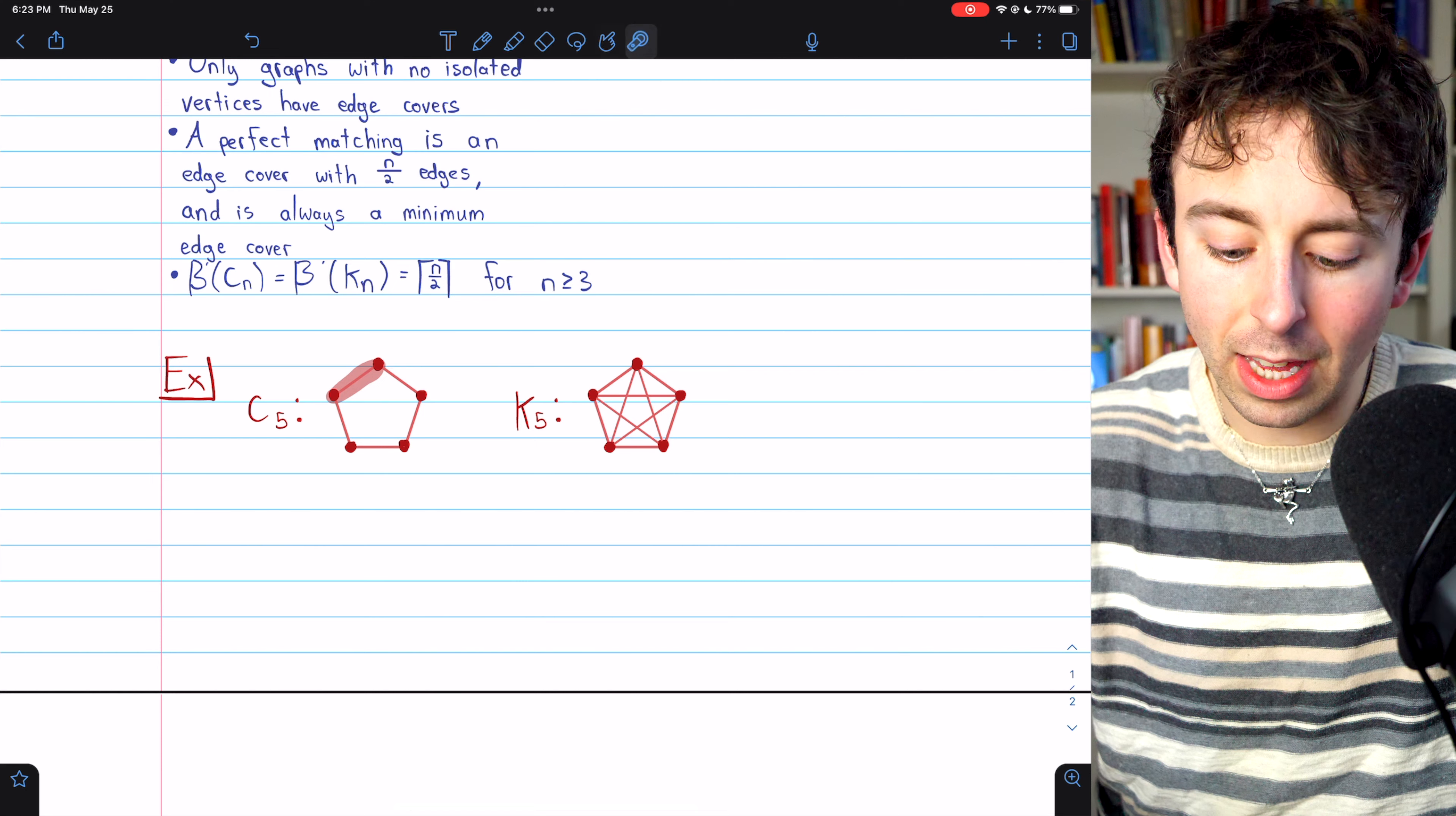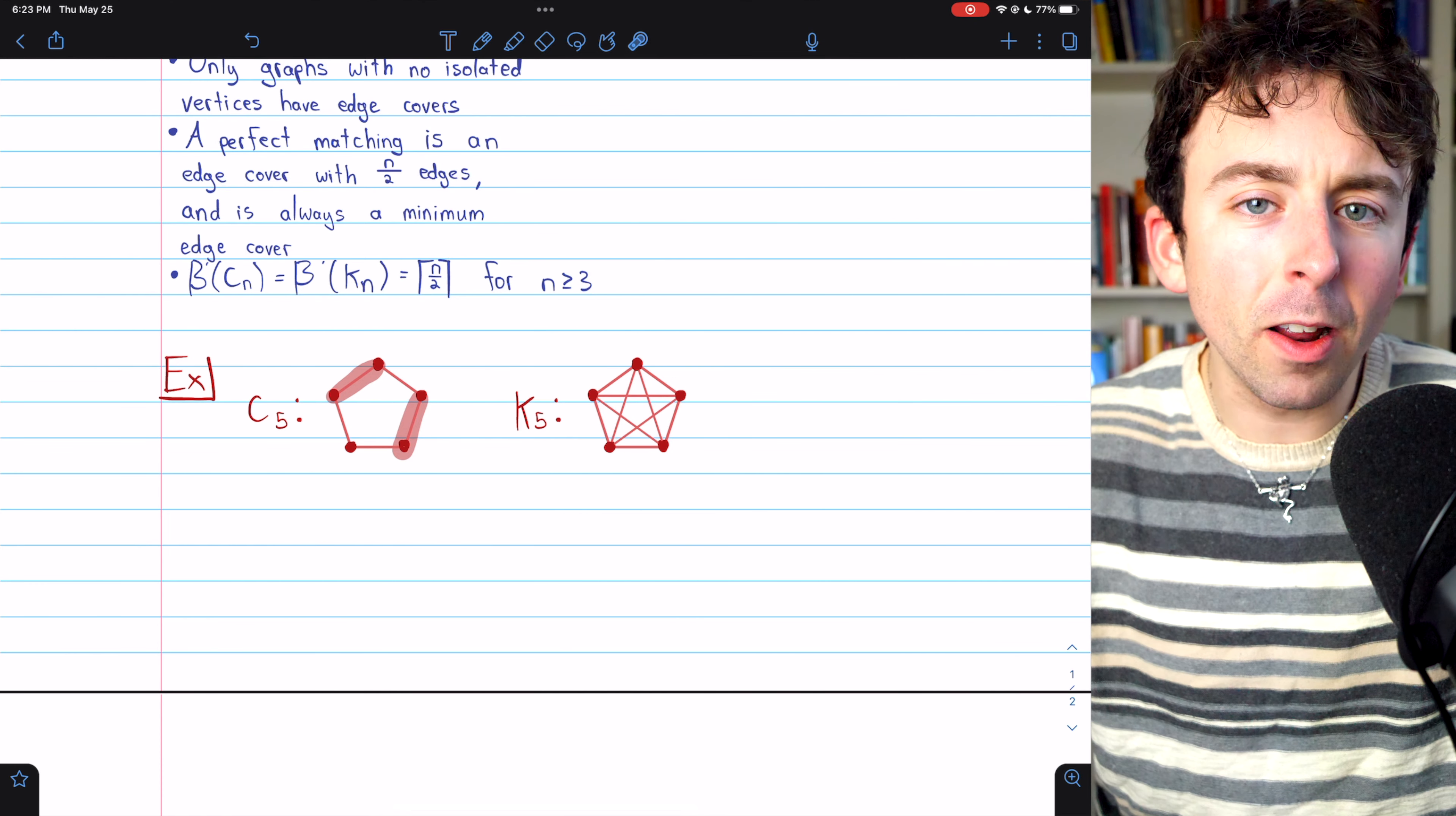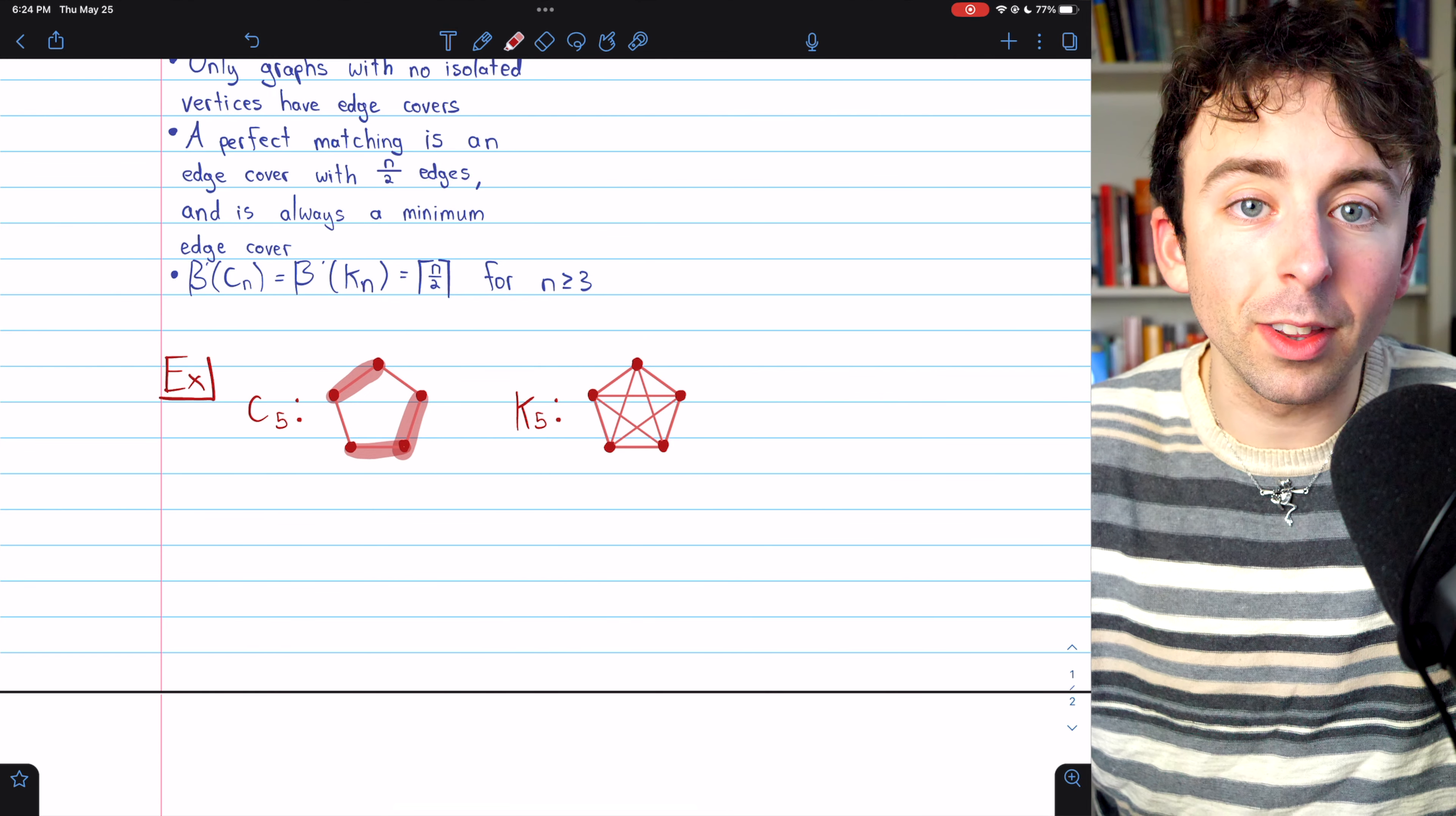we could skip the next edge and then take this edge here, that's going to cover two new vertices. So now we've covered four vertices, but because it has an odd number of vertices, that's going to leave one vertex still needing to be covered. So we're going to need to grab an extra edge. So with three edges, we've covered the graph.